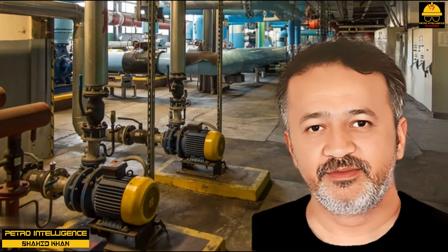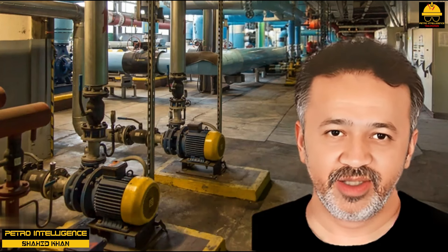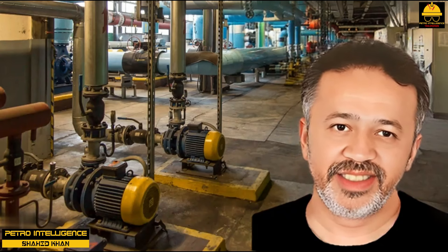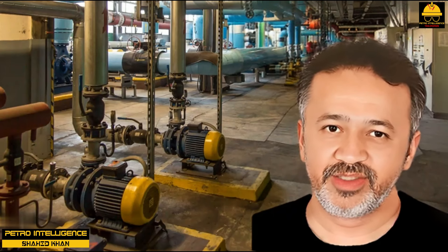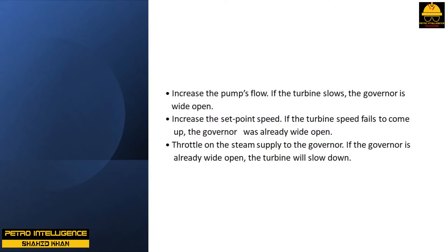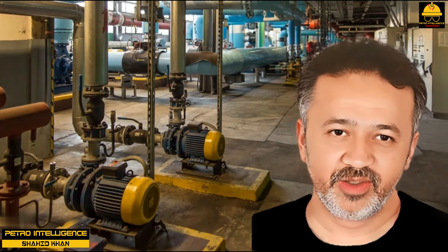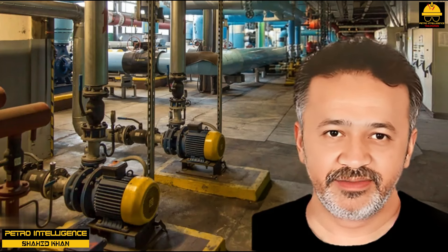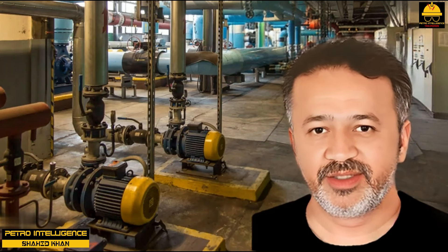A turbine-driven pump is said to be driver limited when the governor's speed control valve is wide open — this valve is usually called the Woodward governor. A few simple methods to determine if the governor is wide open are: increase the pump's flow — if the turbine slows, the governor is wide open; increase the set point speed — if the turbine speed fails to come up, the governor was already wide open; throttle on the steam supply to the governor — if already wide open, the turbine will slow down. Even if the governor steam inlet control valve is 100% open, it may still be possible to increase motive steam into the turbine — the position of the governor when wide open can often be reset to admit more steam flow.